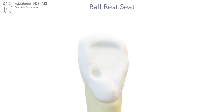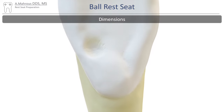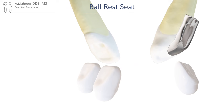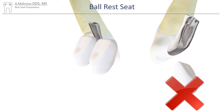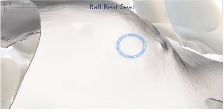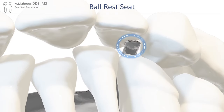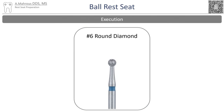Now let's move on to the last rest seat preparation: the ball rest seat. This rest seat is fairly small — only the size of a number six round diamond. The ball rest seat preparation should be located on the most horizontal area of the marginal ridge. Ball rest seats are used specifically in cases where a deep overbite prevents the use of regular cingulum rests. The ball rest is able to make its way through the incisal embrasure without interfering with occlusion.